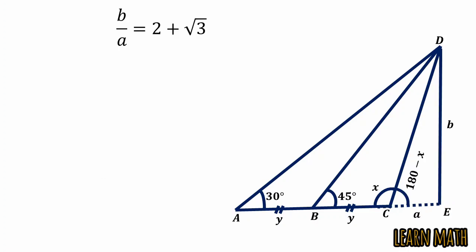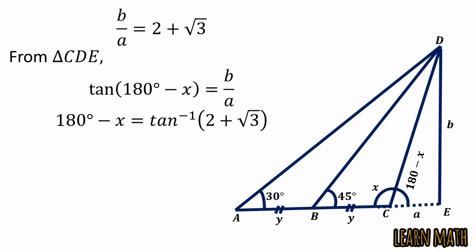Now take the third triangle, triangle CDE. In this triangle, tangent of 180 minus x equals b over a, and b over a equals 2 plus square root 3. Simplifying, tangent inverse of 2 plus square root 3 equals 75 degrees. Therefore, 180 minus x equals 75, giving us x equals 105 degrees.